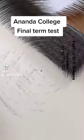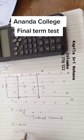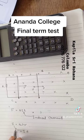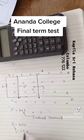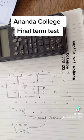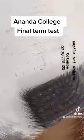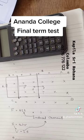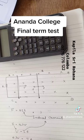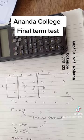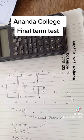By applying V equals I R, where V is the induced voltage, you can find I, the induced current. So B L V equals I R. Solving for I: I equals B L V divided by R.